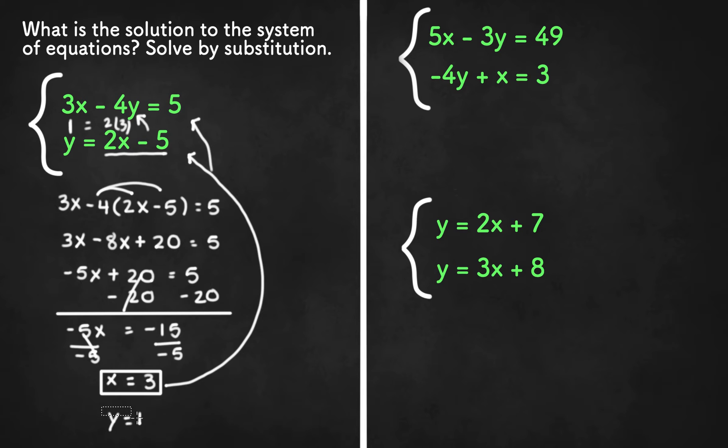And our solution should be 3, 1. But what we should do is we should plug these values back into both equations to check our work. So for the first equation we have 3 times 3 minus 4 times 1 equals 5. 3 times 3 is 9 and negative 4 times 1 is negative 4. And 9 minus 4 equals 5. Which is indeed the right solution.